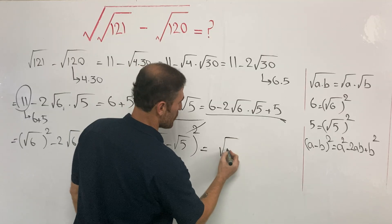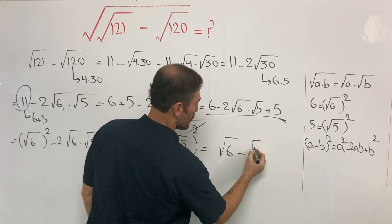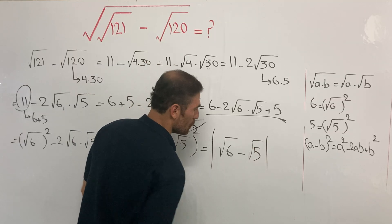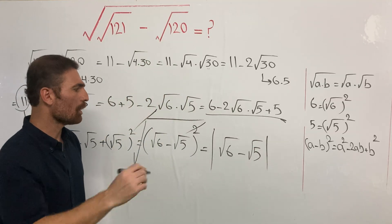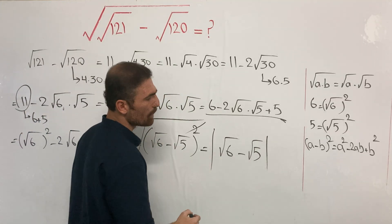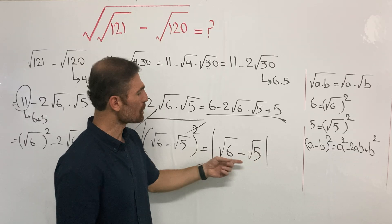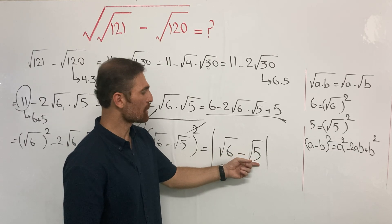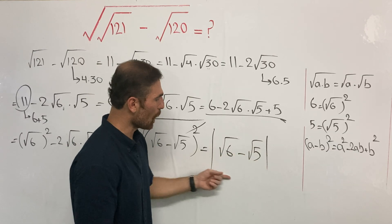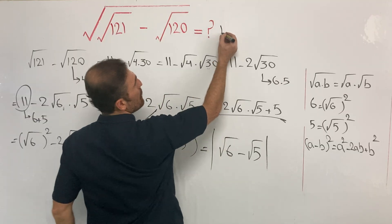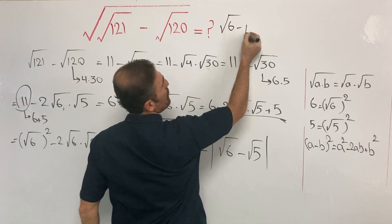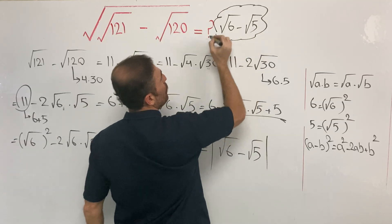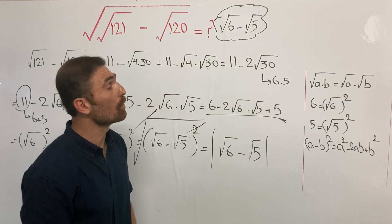So the answer is second root of 6 minus second root of 5. Do not forget — we need absolute value here. But on the other side, 6 is greater than 5, so second root of 6 is greater than second root of 5. That is why I can rewrite it as second root of 6 minus second root of 5. And this is the most simplified answer to our question.